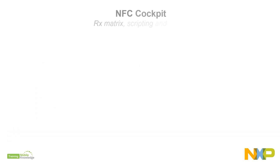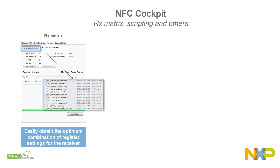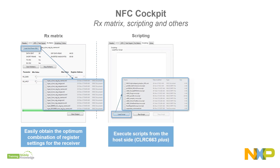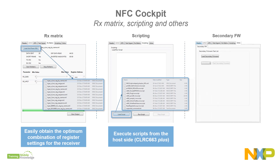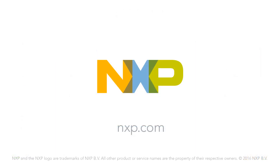Last but not least, the RX-Matrix test tool allows you to find the optimum receiver settings. In addition, an arbitrary waveform generator can be used to retrieve PCD sensitivity plots. You can import pre-programmed scripts to be executed from the host side, and you can also load a secondary firmware application from several files offered in the installer package, such as the EMVCO loopback application or the card emulation function. More information at www.nxp.com.